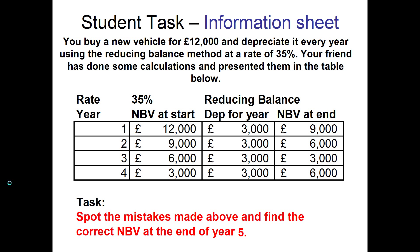The second mistake: notice the amount of depreciation — it's constant, it's equal, it's the same each year. So although it's incorrect in the first year, the key evidence here is that depreciation each year is 3,000, meaning the wrong method has been used. The straight line method has been used when the question is asking to use reducing balance. That's your second error.